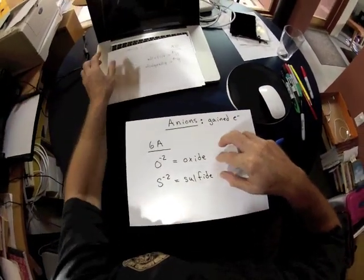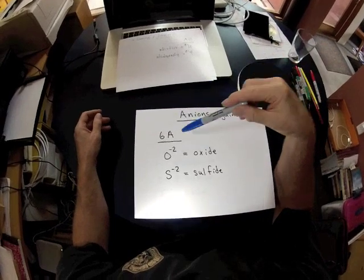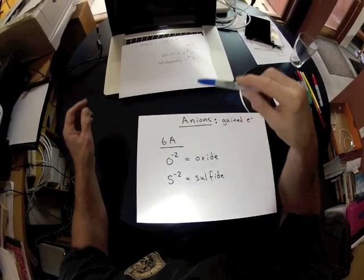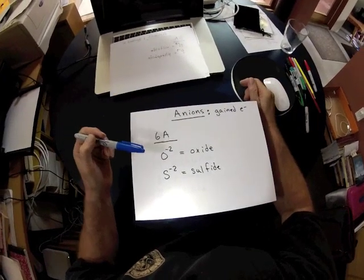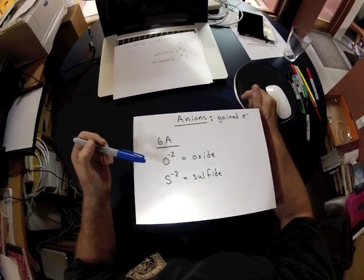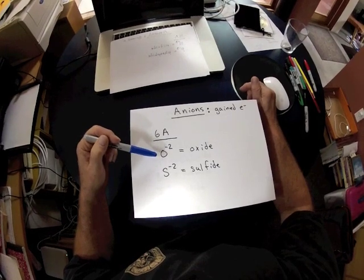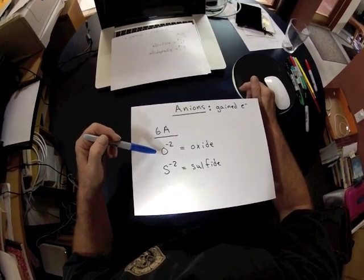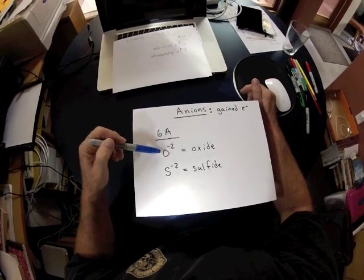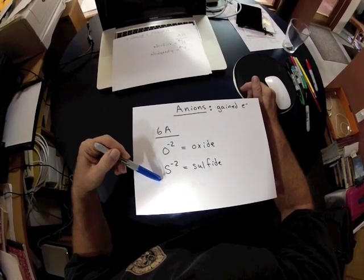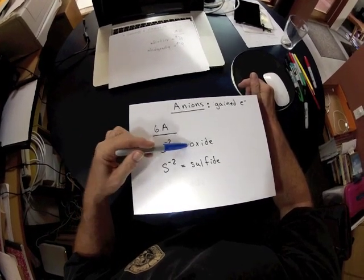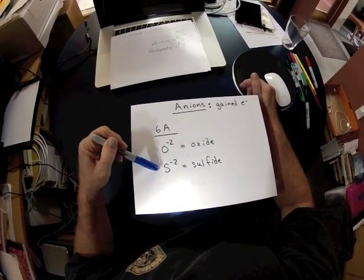We step one group to the right, and we're in group 6A. There are two elements there, oxygen and sulfur, that will take electrons when they react with some type of a metal. In the case of oxygen and sulfur, they can take on two additional electrons. So oxygen becomes O-2, and sulfur becomes S-2. We call O-2 oxide, and we call S-2 sulfide.